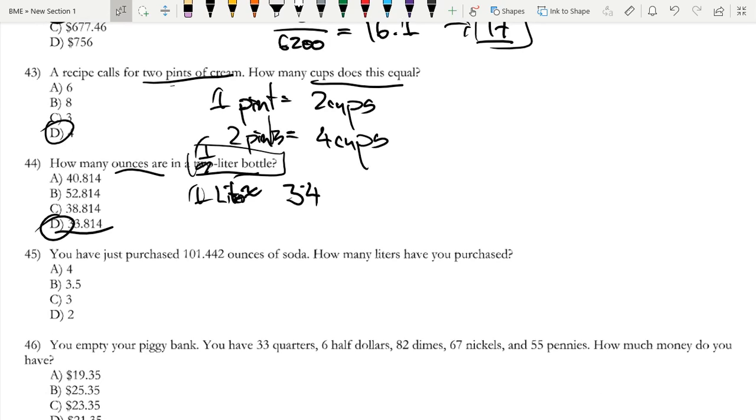Again, this is the same kind of thing. You just have to have the conversions memorized. But now that we know the conversions, we can always do this. So if one liter is 34 ounces, about 34 ounces, it's actually this number, 101.422.